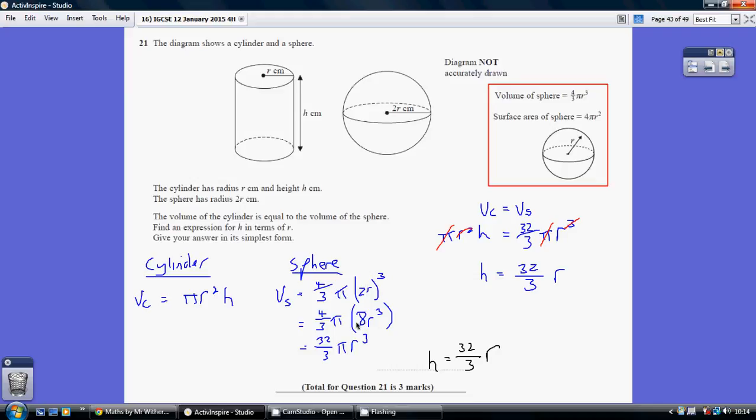So then tidying this up, 4 times 8 is 32. 32 divided by 3 is just the number bit. So 32 over 3 pi R cubed. Now we're told that these two volumes are equal. The volume of the cylinder is equal to the volume of the sphere. So pi R squared H equals 32 over 3 pi R cubed.